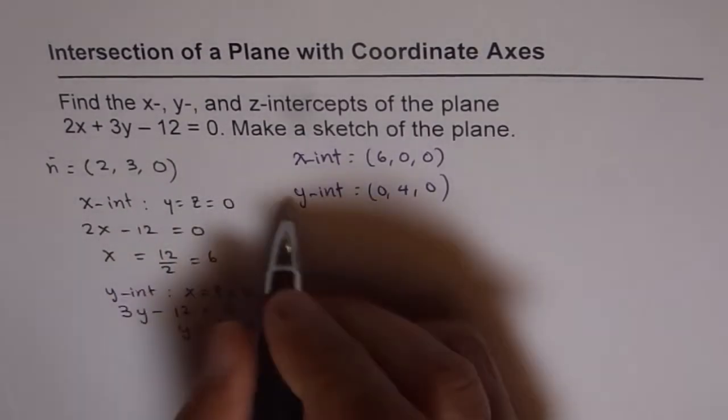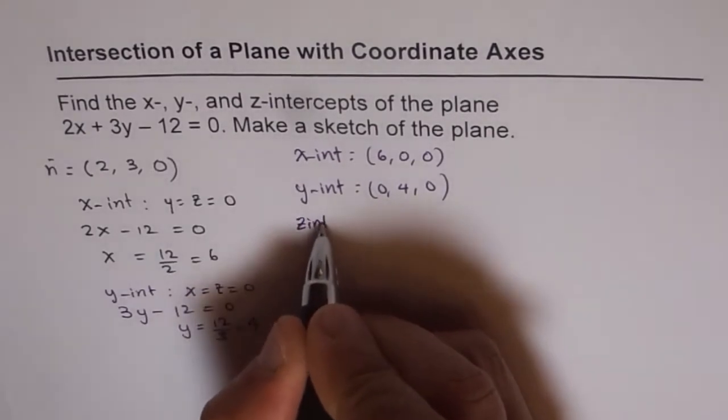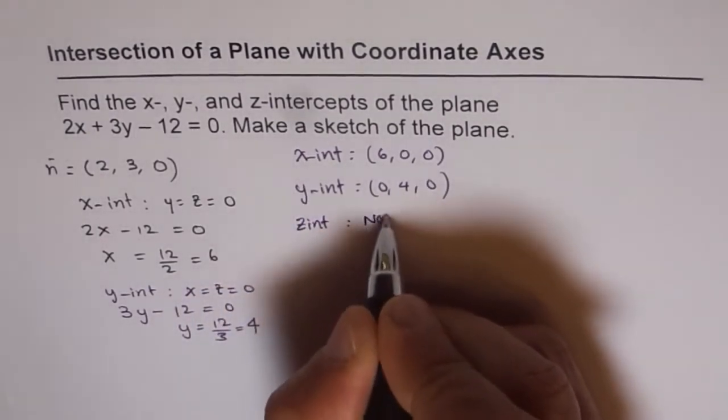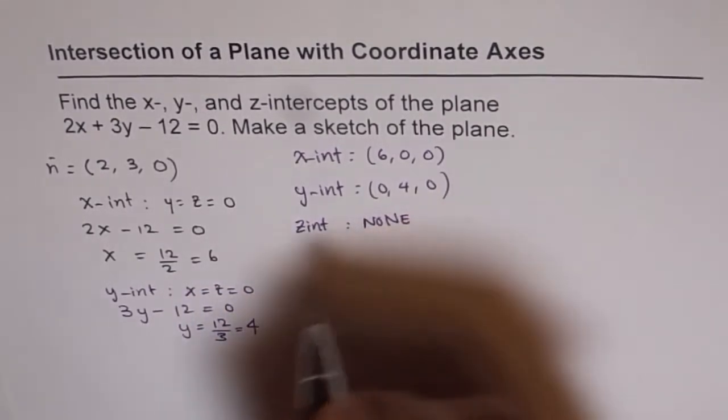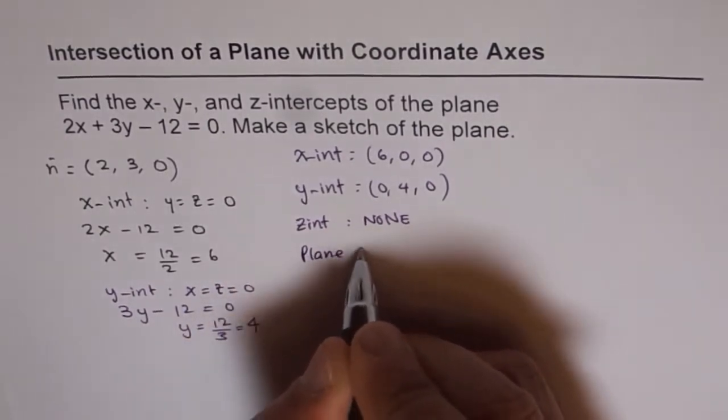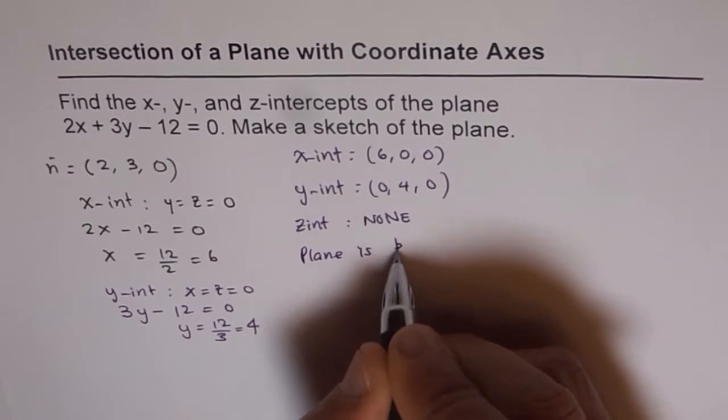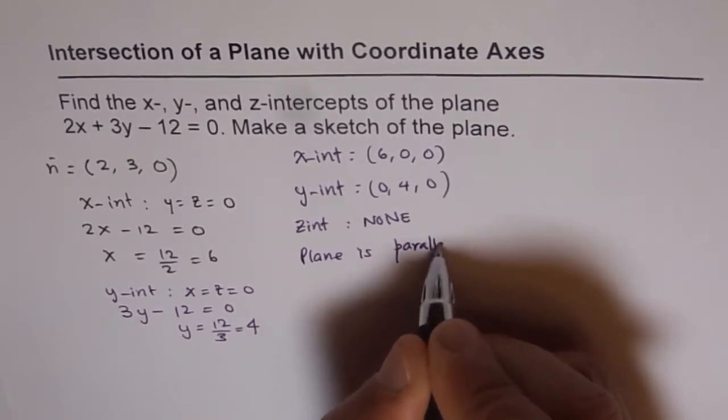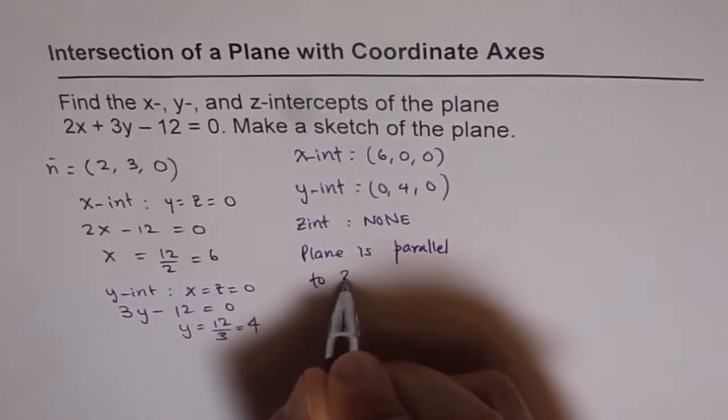Let me write down very clearly. Z-intercept: none. Since the plane is parallel to z-axis.